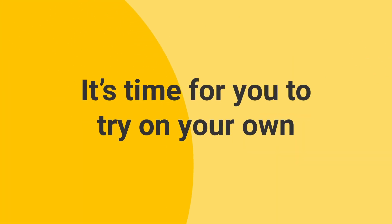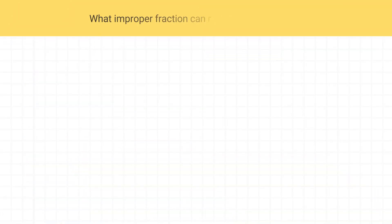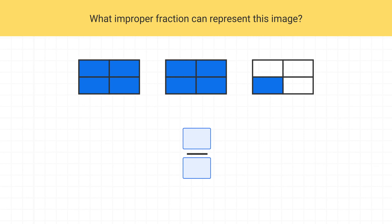Now it's time for you to try on your own. What improper fraction can represent this image? In this image, we see that we have a total of 9 shaded pieces. Our numerator is 9. Then we can count that there are a total of 4 parts in each rectangle, so the denominator is 4. We can use the improper fraction 9 fourths to describe this image.